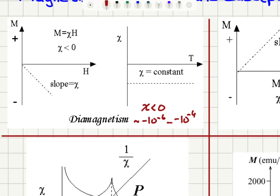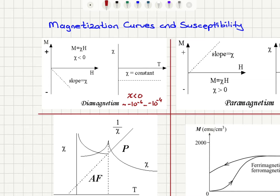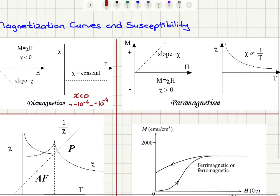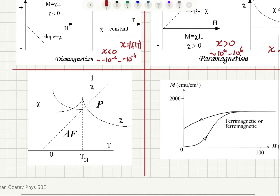For diamagnets, the susceptibility is of the order 10⁻⁶ to 10⁻⁴. It's small and also not temperature dependent — it's flat with temperature. So diamagnetic materials have negative susceptibility, small and not temperature dependent. For paramagnetism, on the other hand, the susceptibility is positive, also small of the order 10⁻⁴ to 10⁻⁶, but it does have a temperature dependence — chi varies as 1 over T. Here it is not a function of temperature.